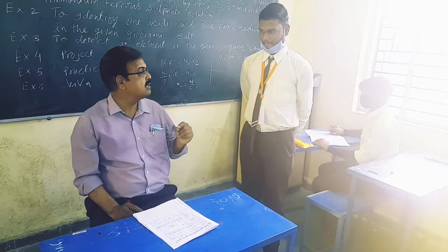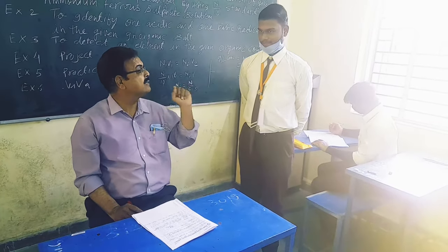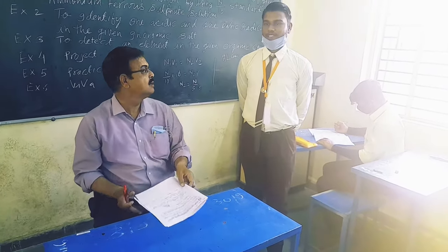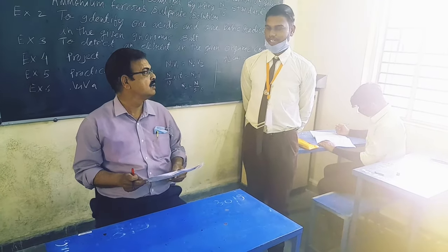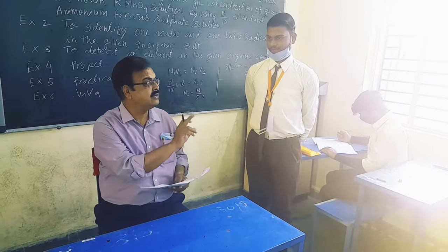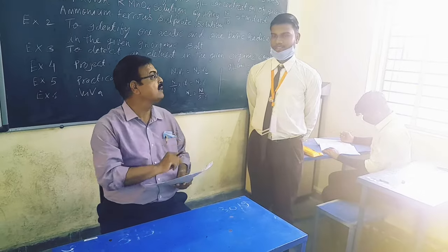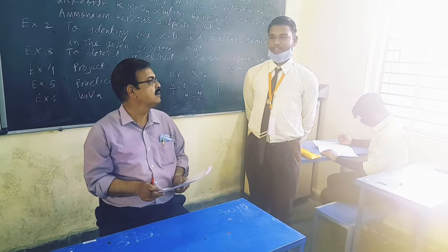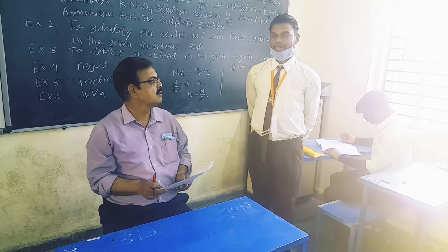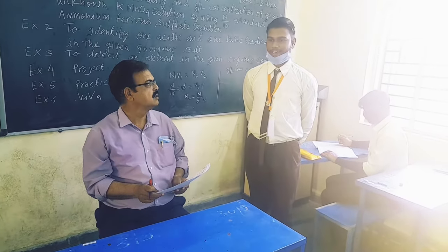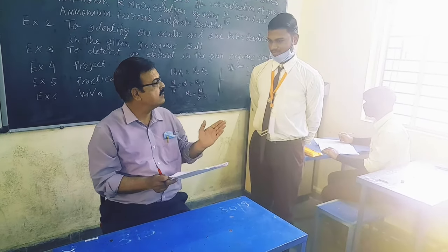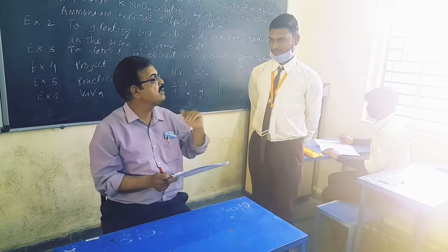First question: What are acidic radicals? A negatively charged part in the salt is called an acidic radical. How many groups of acidic radicals are there? There are three groups: weak acid radical, strong acid radical, and special type acid radical. Which acidic radical have you detected?